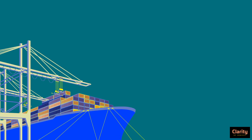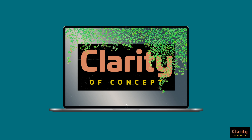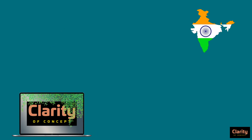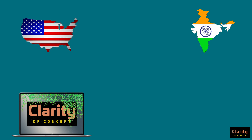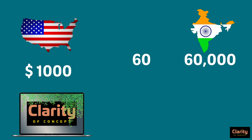Let us see what happens to exports and imports. Say you wanted an Apple MacBook with the highest available configuration, which is not available in India, so you thought of importing it from America. Assume it costs 1000 dollars. Since 1 dollar equals 60 rupees, you would pay 60,000 rupees. Then inflation occurs and the rupee depreciates — 1 dollar now equals 70 rupees. For the same laptop of 1000 dollars, you would have to pay 70,000 rupees to import it. It turned out to be very costly.